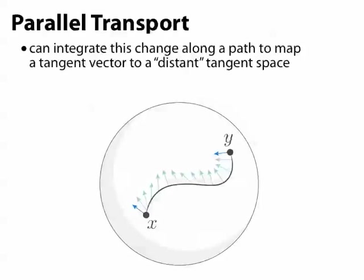Once we have this local information, we now can figure out how a vector changes along a longer path. All we have to do is plug tangents to this path into our connection and integrate the resulting changes in angle. This process is called parallel transport.